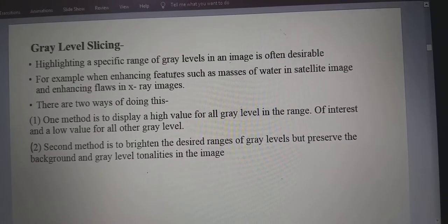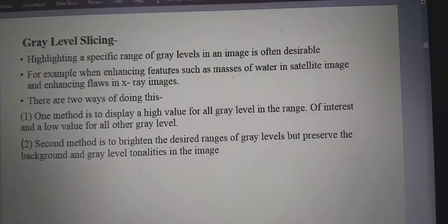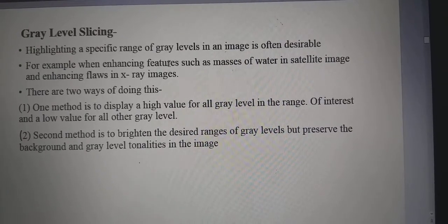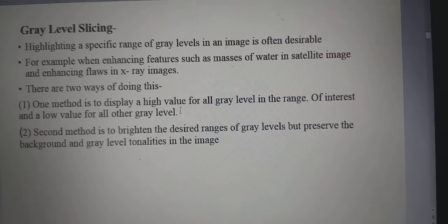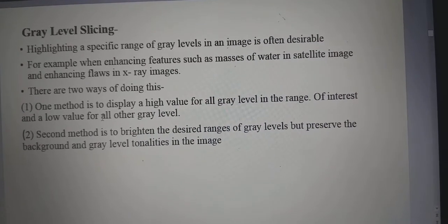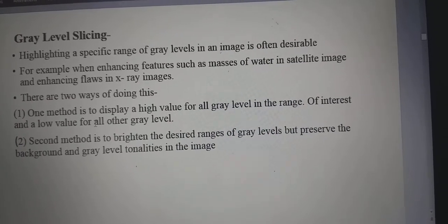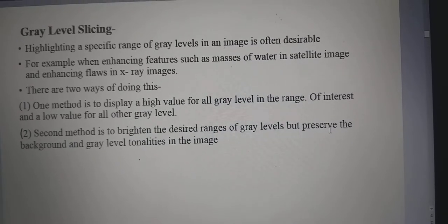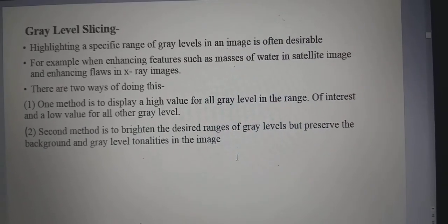Gray level slicing highlights a specific range of gray levels in an image. It is useful for enhancing features such as masses of water in satellite images or flaws in X-ray images. Two methods exist: the first displays high values for gray levels in the range of interest and low values for all others; the second brightens the desired range while preserving background and gray level tonalities.